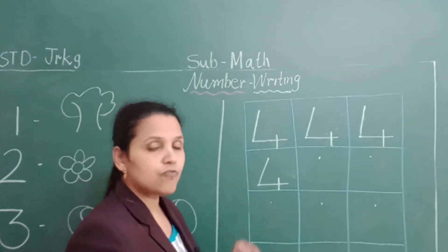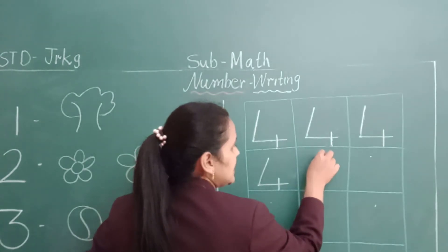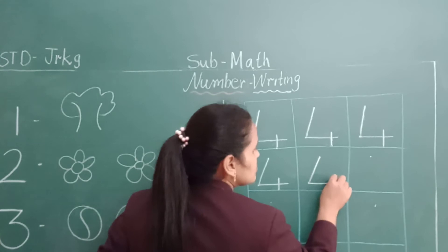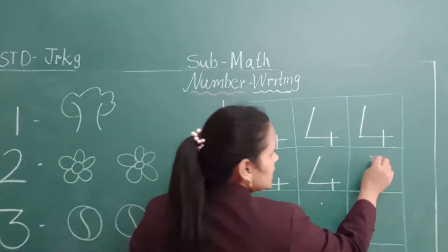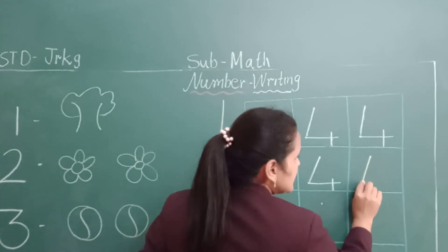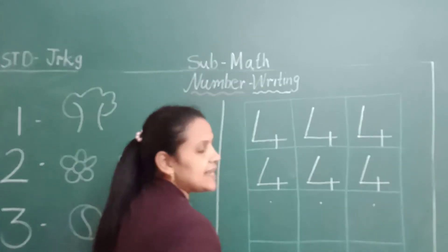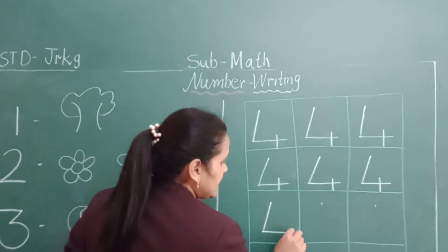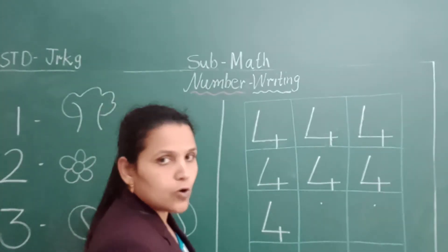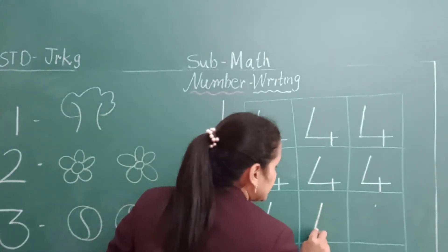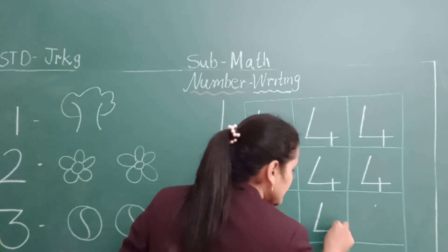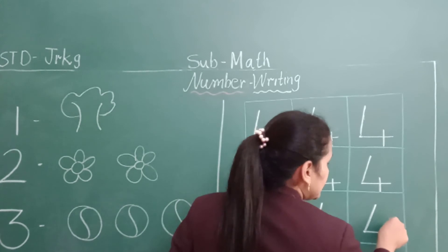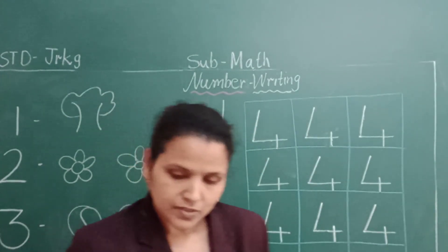Put your pencil on the dot and take one slant line. After that, slipping line and take one small standing line — this is number four. Again, put your pencil on the dot and take one slant line, slipping line and one small standing line. You have to write this way only.